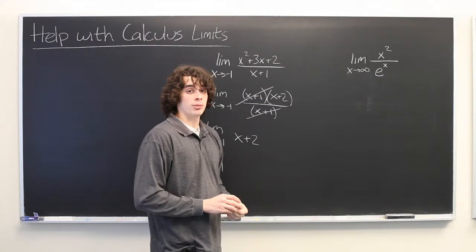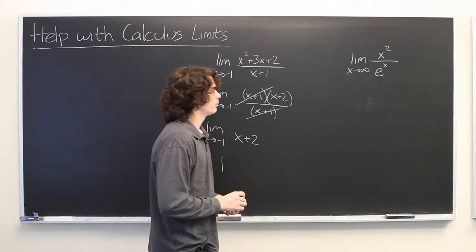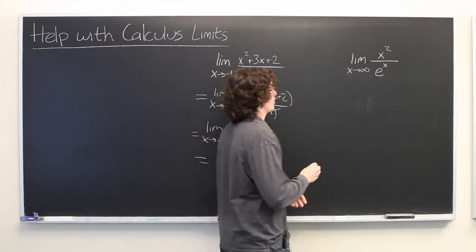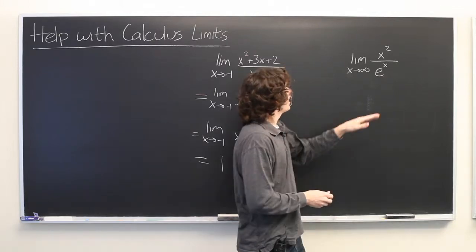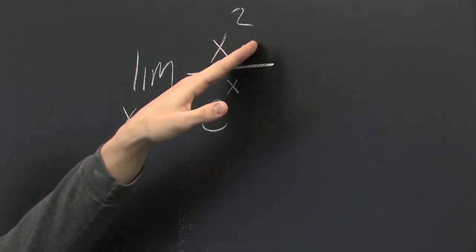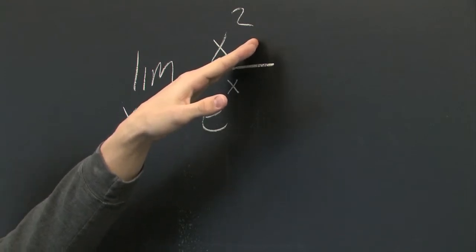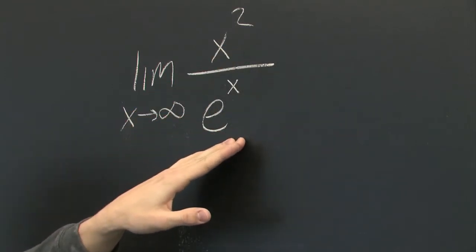But what we can use is something that's known as L'Hopital's rule. There's a French mathematician who came up with this. What L'Hopital's rule states is that if the numerator of the limit goes towards either positive or negative infinity, and the denominator also goes towards positive or negative infinity,